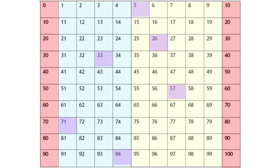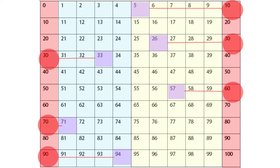These numbers — five, twenty-six, thirty-three, fifty-seven, seventy-one, and ninety-four — will now be rounded to the nearest ten. As you can see, five rounds to ten. Twenty-six rounded to the nearest ten is thirty. Thirty-three rounded to the nearest ten is thirty. Fifty-seven rounded to the nearest ten is sixty. Seventy-one rounds to seventy. And ninety-four rounds to ninety.